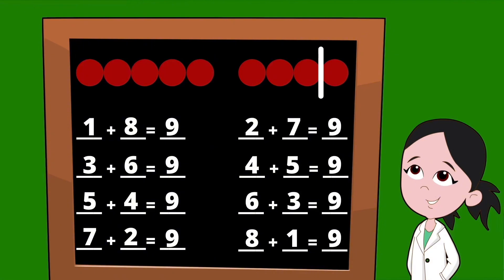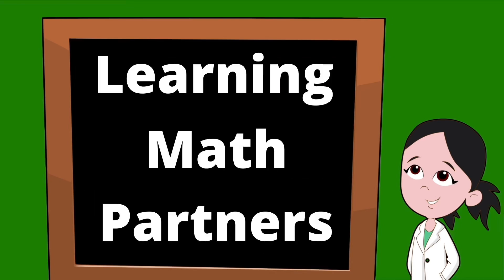Let's do a quick review. Our partners for the number nine are: one and eight, two and seven, three and six, four and five, five and four, six and three, seven and two, and eight and one. There you have it — all eight sets of partners for the number nine. Thanks so much for joining us. We hope you had a great time learning.